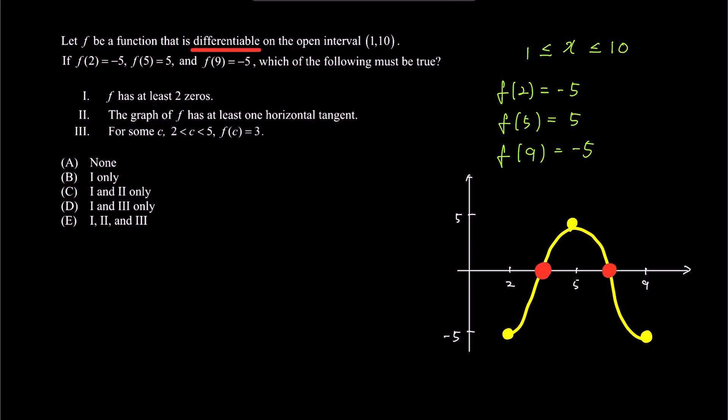Now let's consider the answer choices. First, f has at least 2 zeros. Looking at the graph, it is evident that the curve crosses the x axis at least twice. This means it has at least 2 zeros. Additionally, if we were to draw a more intricate curve passing through these points, it could have even more zeros. Therefore, the first statement is true.